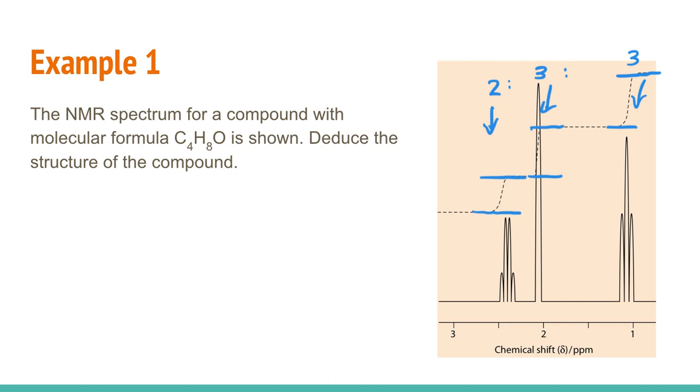Now in terms of the splitting, we can use the splitting patterns. This first peak here with the two ratio means that we have two protons in this environment. And it is split into four, which means it's next to three protons or likely a methyl group. So this is probably two protons, probably going to be an ethyl group and it's going to be next to a methyl group. So that's actually a really good indicator that you have an ethyl.